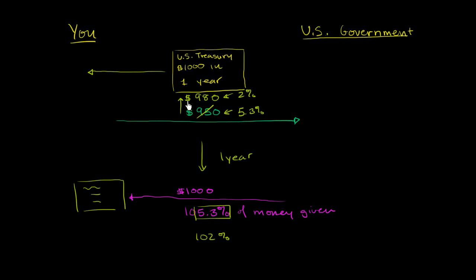...when they say, if treasury prices go up, then the yield goes down. So if there's more demand for treasuries, the interest rate on treasuries will go down. In the next video, we'll talk about how this might change for treasuries of different maturity dates.